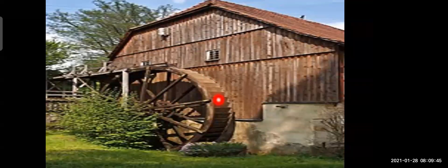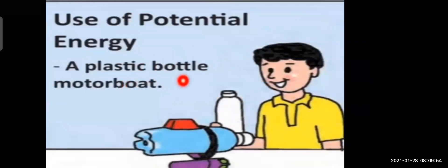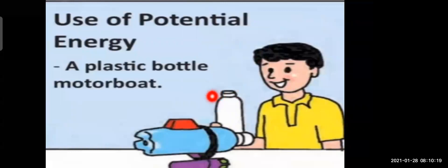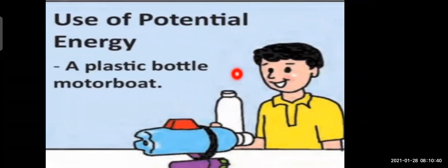The second stall was the use of potential energy — a plastic bottle motor boat. Potential energy is the energy stored in an object due to its specific state or position. The plastic bottle motor boat moves due to the energy stored in it, demonstrating how potential energy can be used practically.